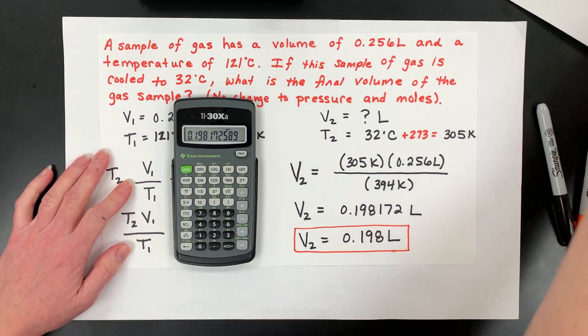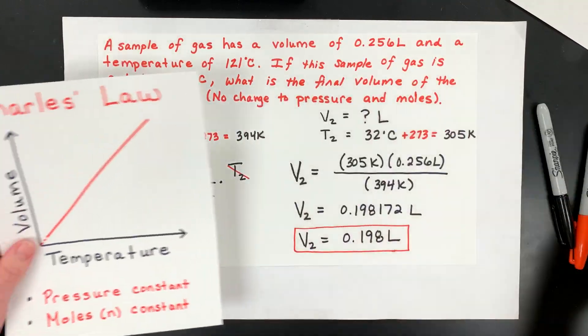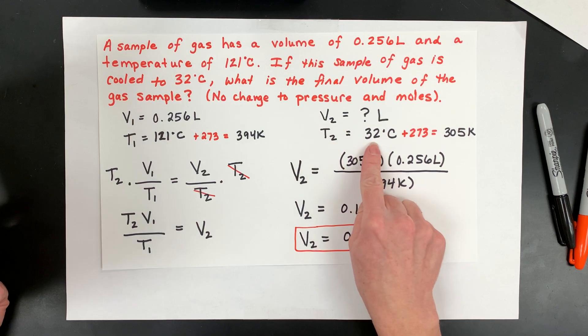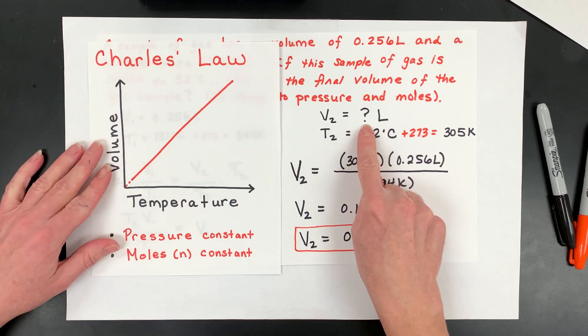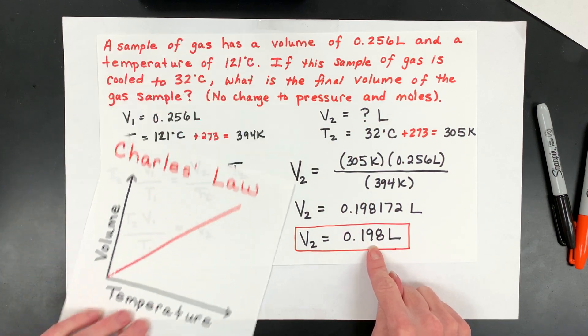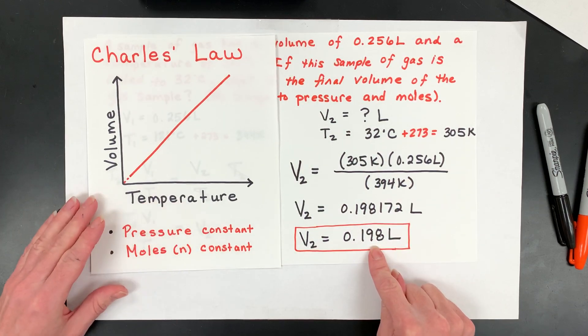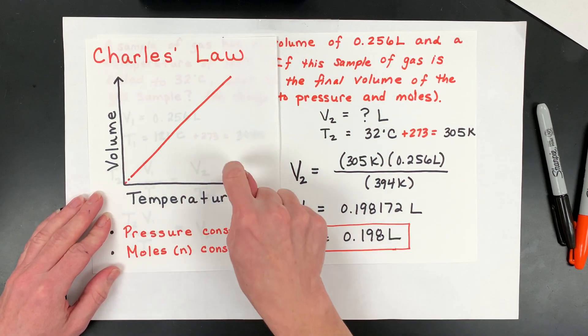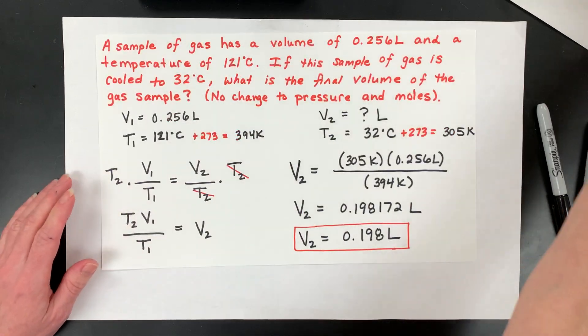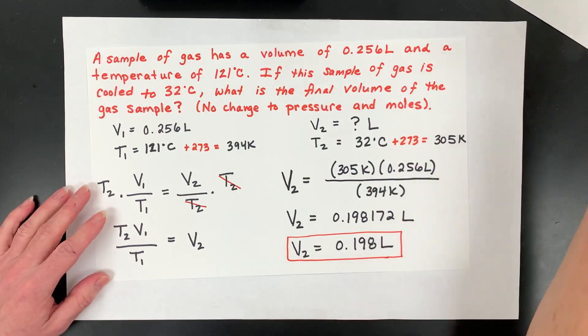Always go back. I got to grab this graph one more time. Go back to the fact that the temperature went down, we cooled it. So the volume also should go down. And it did. It started out at 0.256 and now it's down to 0.198 again, because there is a direct relationship between these.